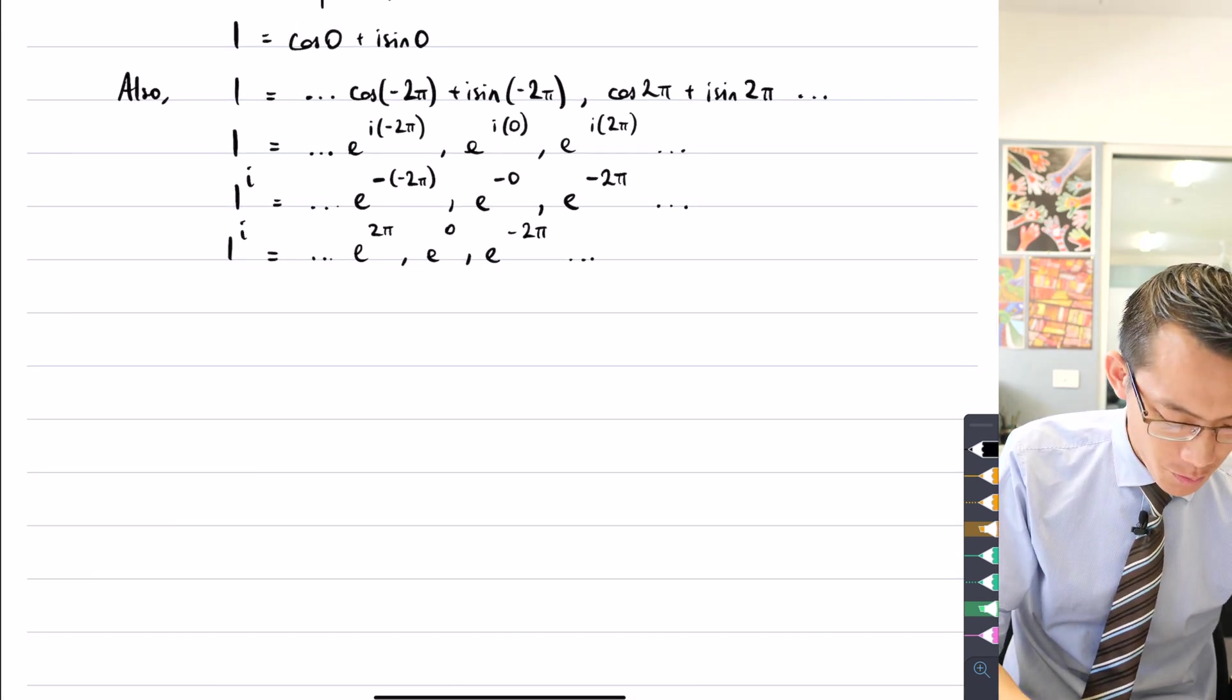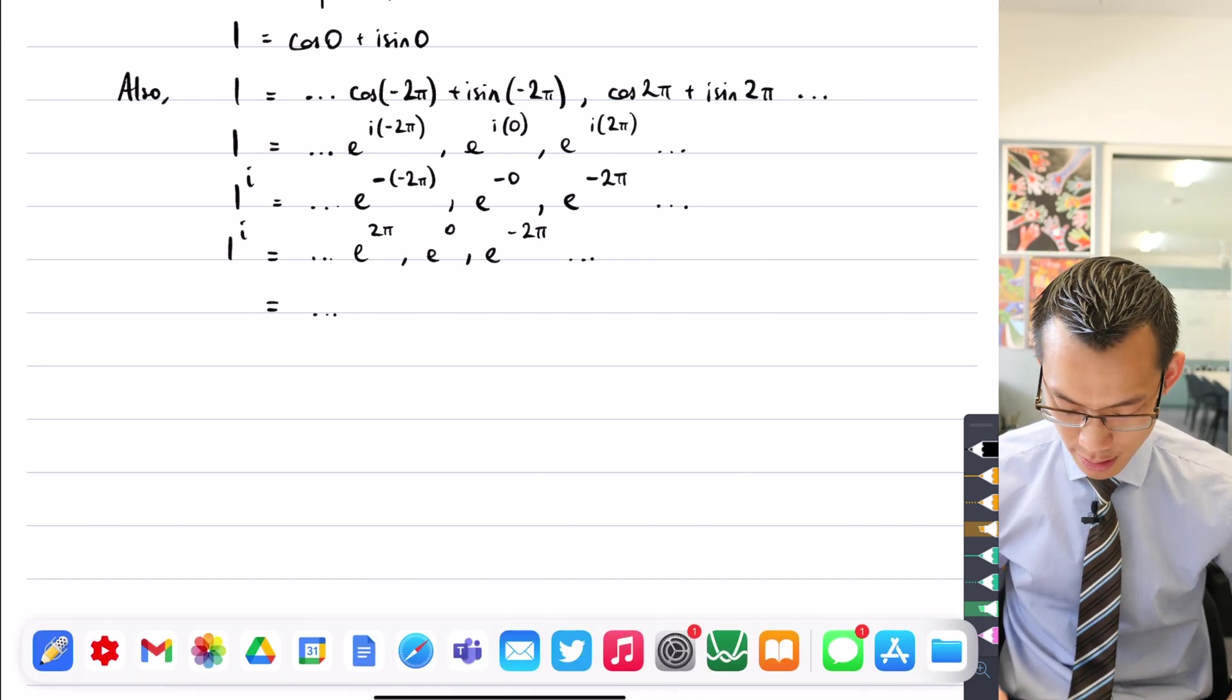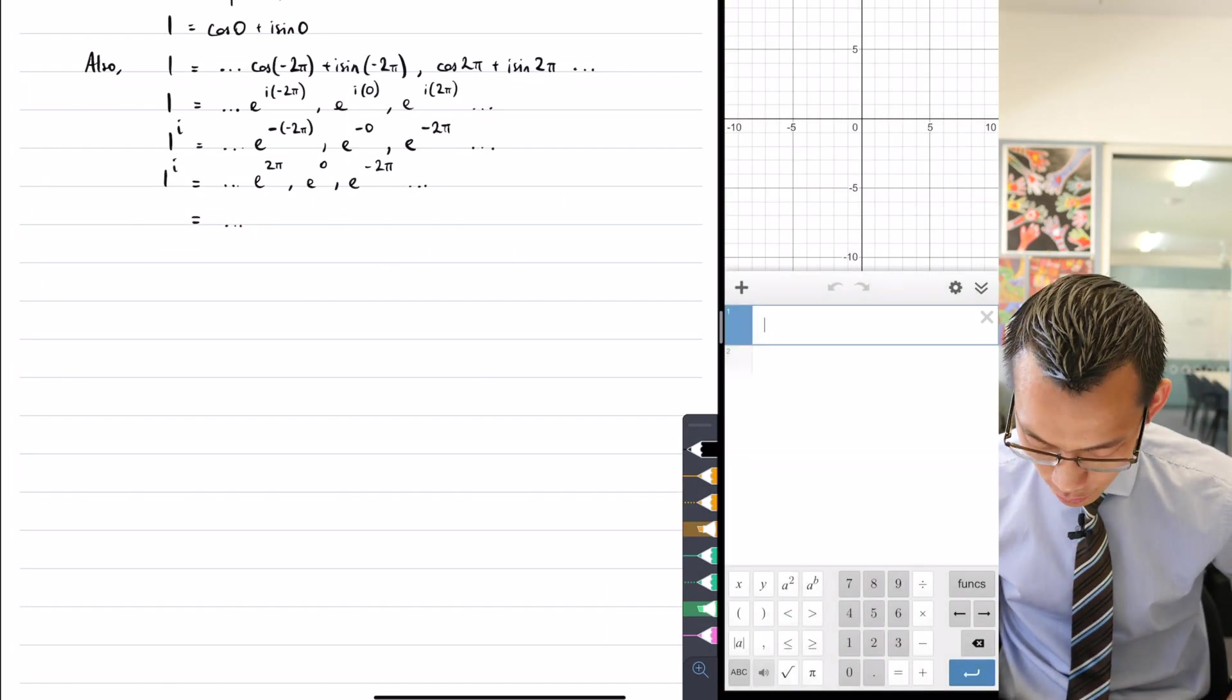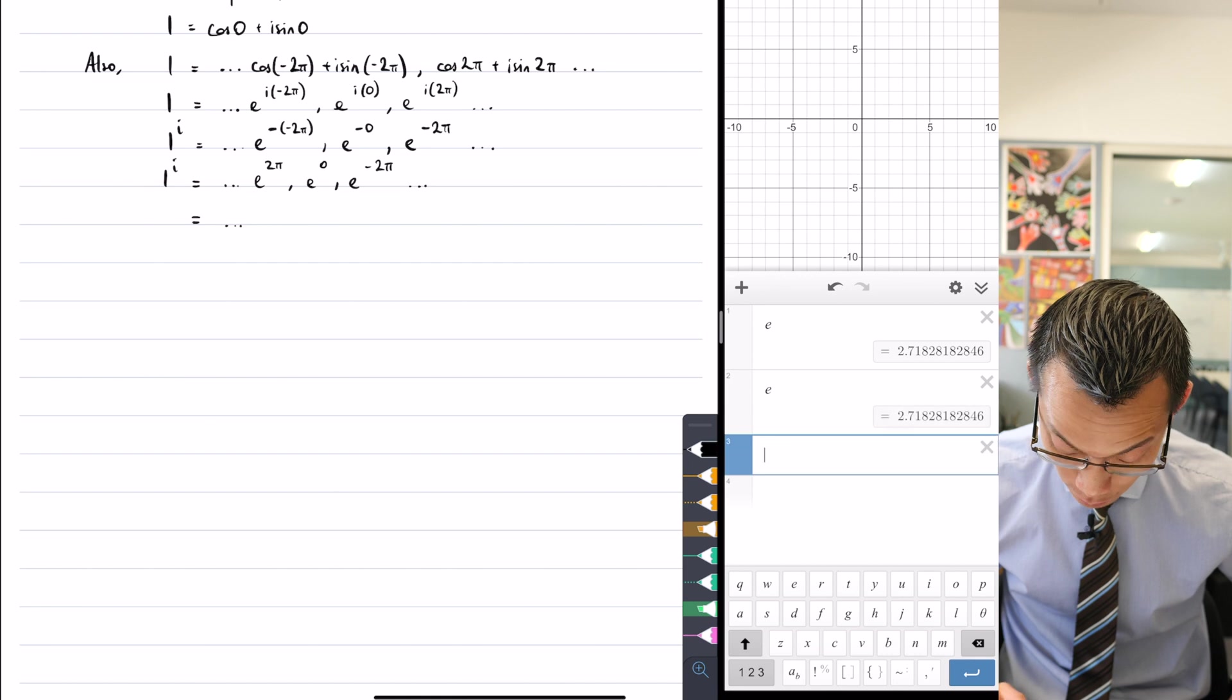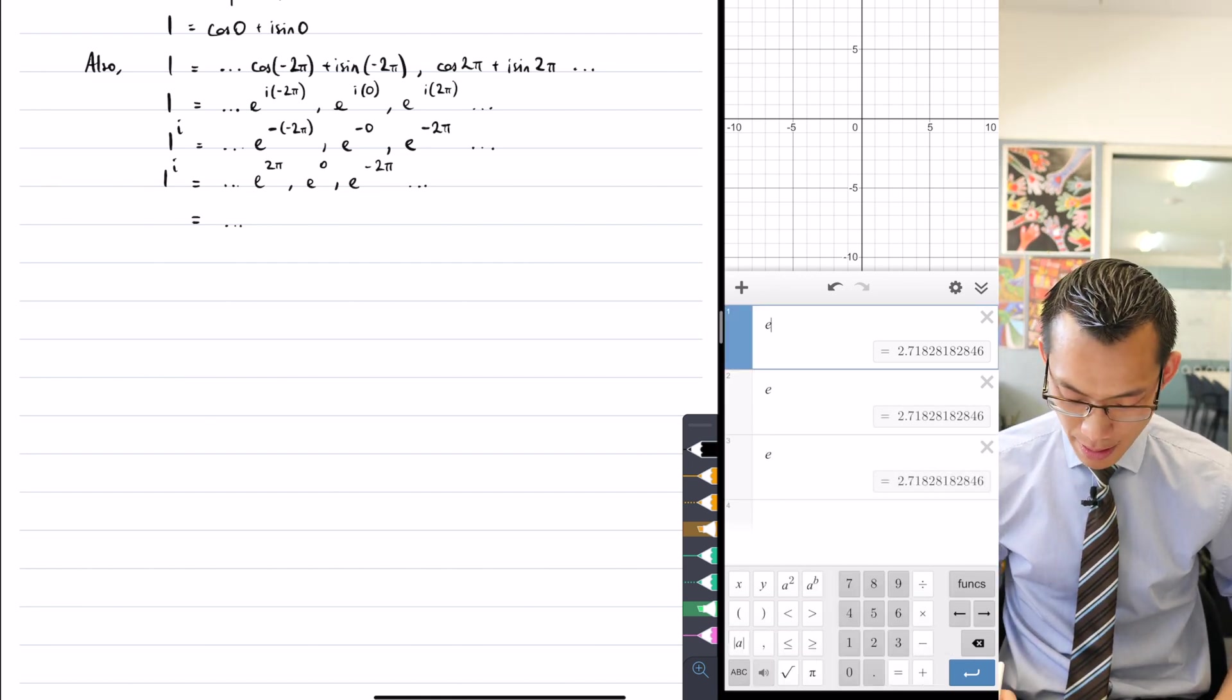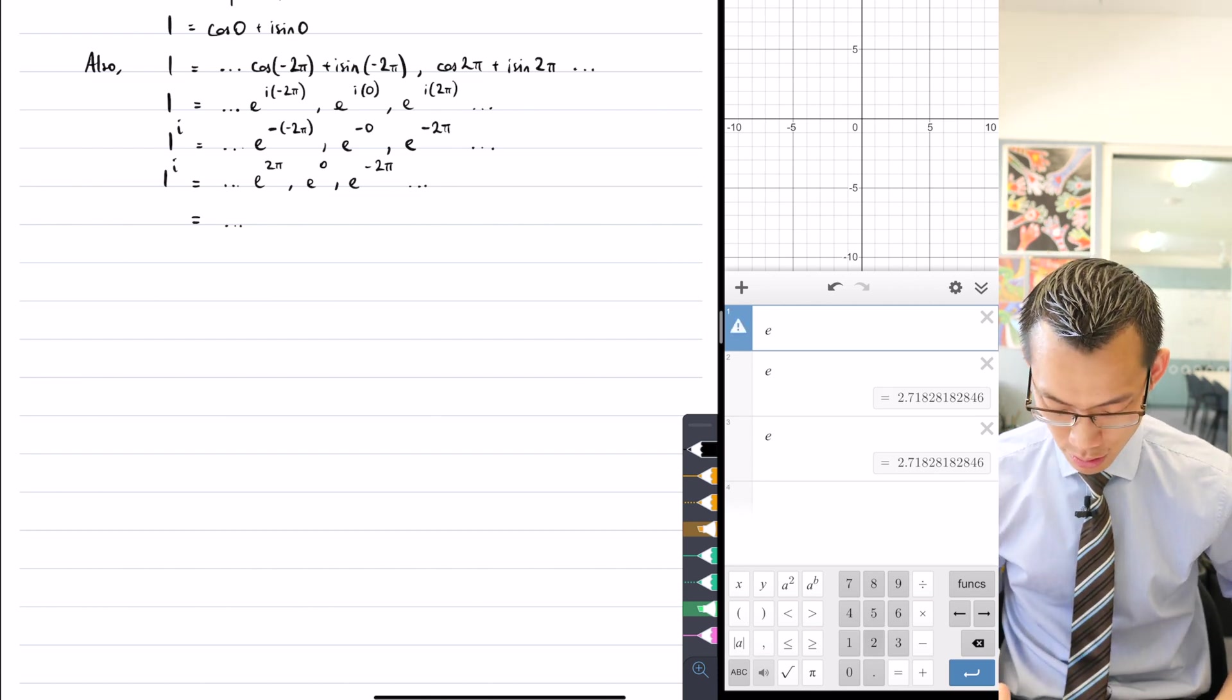I can say well what is e to the two pi. Let's just take the positive one. So I've already got my calculator over here, I'm actually going to use this a couple times. I'm going to go e to the power of, let's raise that power, and the first one that I'm interested in doing is two pi, so two and then pi.